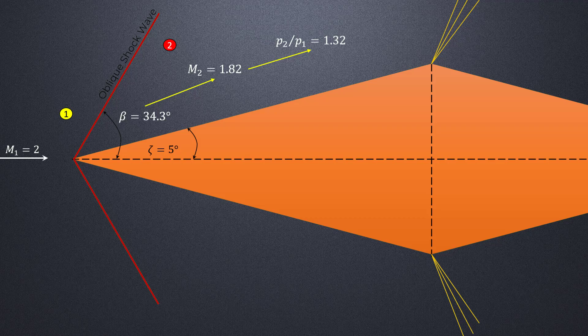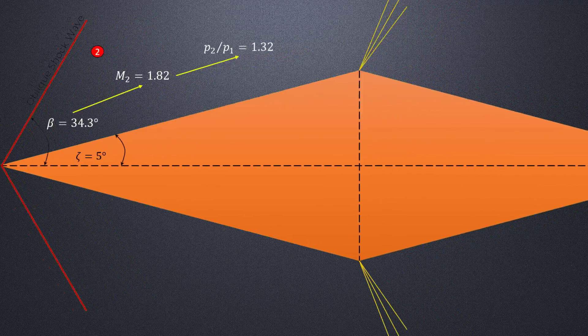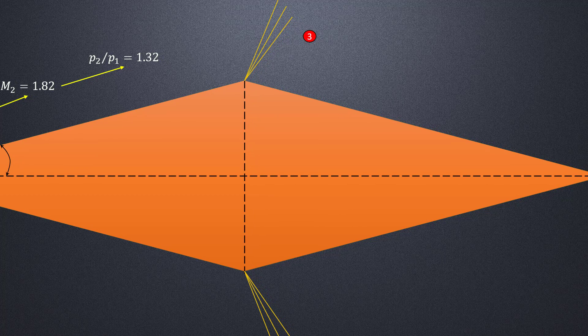Since region 3 is behind an expansion wave, we can use the Prandtl-Meyer function to calculate the Mach number after the expansion wave to be 2.185 and the pressure ratio from the isentropic relations to be equal to 0.57.